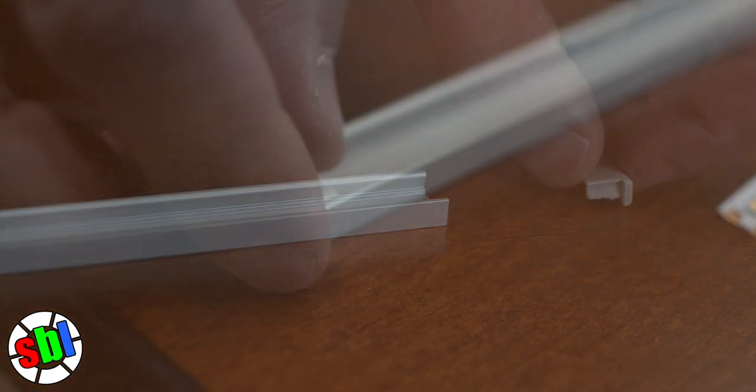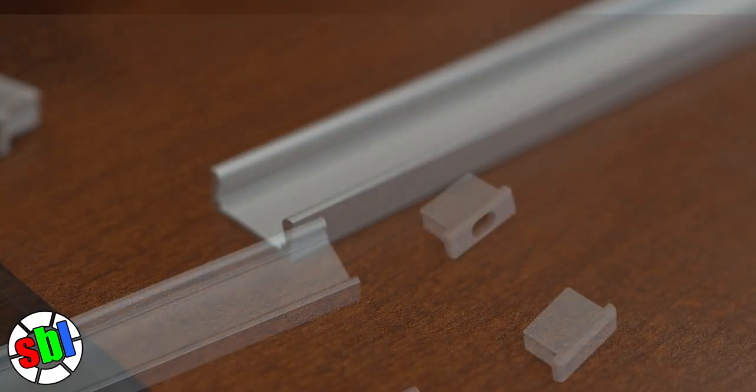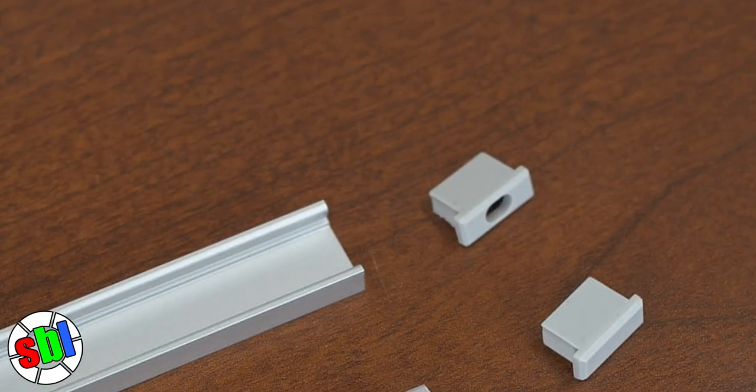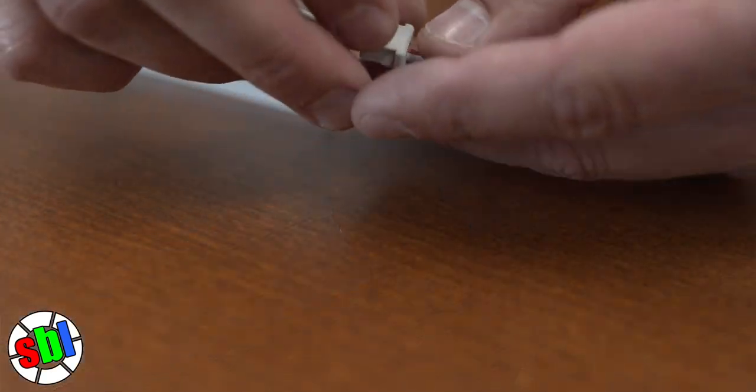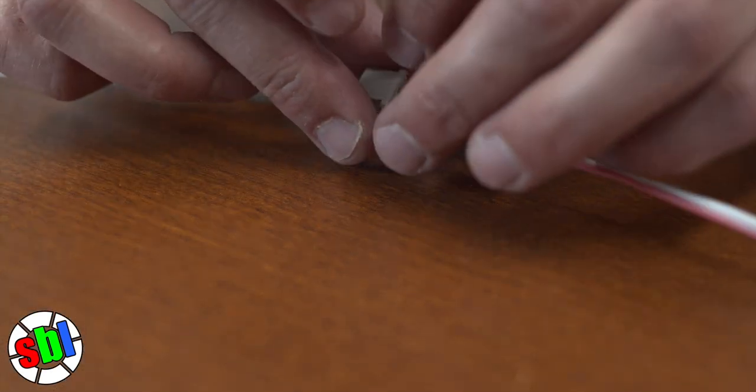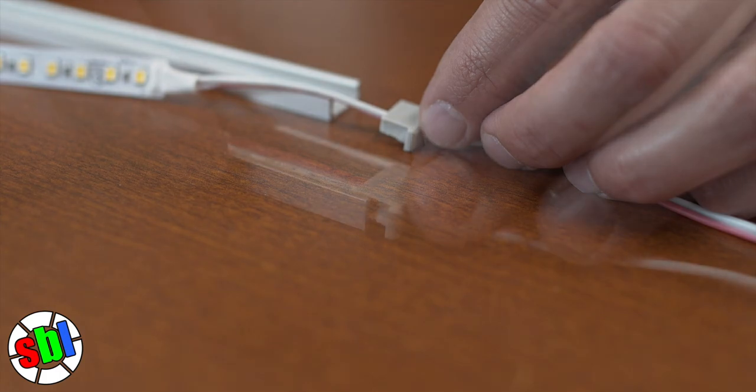Remove both end caps and drill a hole in the end where the wire will be exiting the channel or purchase one of our end caps with pre-drilled holes. Slide the wires through the end cap and then install the cap onto the channel.